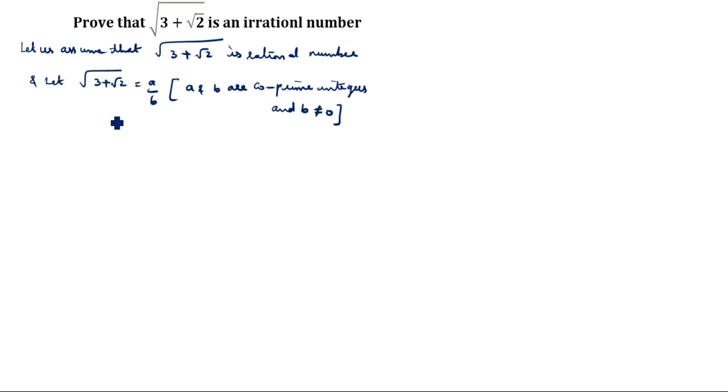Squaring on both sides. Root of 3 plus root 2 the whole square is equal to a square divided by b square. This square and root is cancelled. 3 plus root 2 is equal to a square by b square.